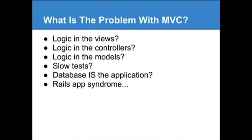One day everyone got together and said fat controllers are bad, skinny controllers are good. All of our logic will go into the model, because it's not supposed to go in the view, and it's not going to go into the controller, so it must go in the model, right? Because you have three things: M, V, and C. So if V and C are out, M is where all the logic goes. So you get fat models.